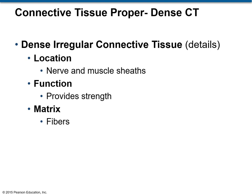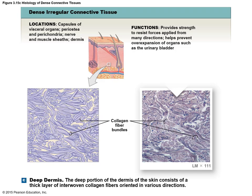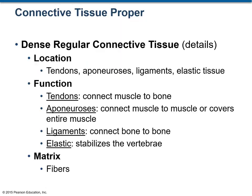We are done with loose connective tissue proper and now move on to dense connective tissue proper. The first type is dense irregular connective tissue, which is present in the coverings around nerves and muscles, and its function is to provide strength. Dense regular connective tissue is present in tendons, ligaments, and aponeurosis. A tendon connects a muscle to a bone, a ligament connects bone to bone, and an aponeurosis connects muscle to muscle.